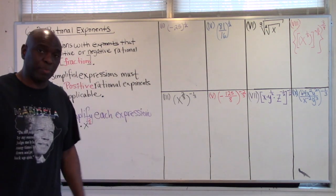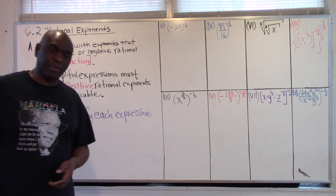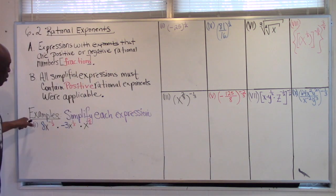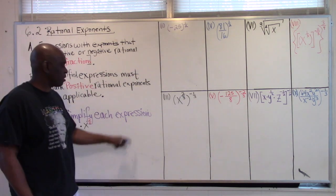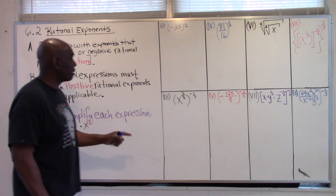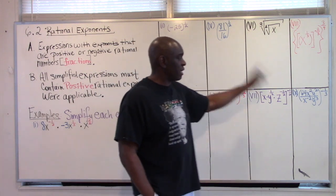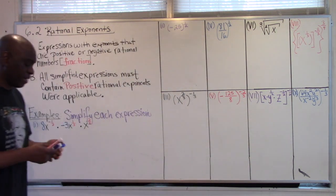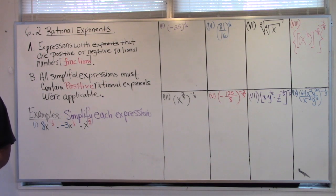So we have some examples up here — nine examples that we're going to simplify. For all the examples, you must simplify each expression. The coefficients are in blue and the exponents are in red. The coefficients, which are in blue, are the numbers that you multiply. The numbers in red are the exponential rational exponent powers, and those you add — because we have the same base of x for each expression. So multiply the blue and add the red.